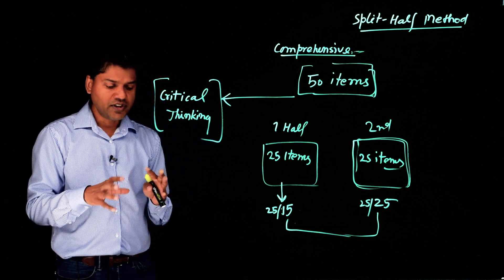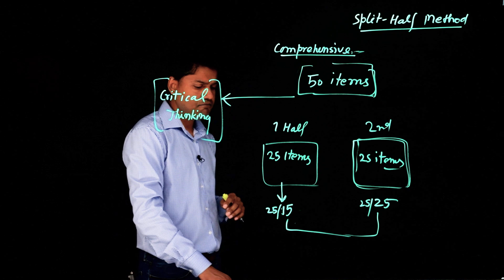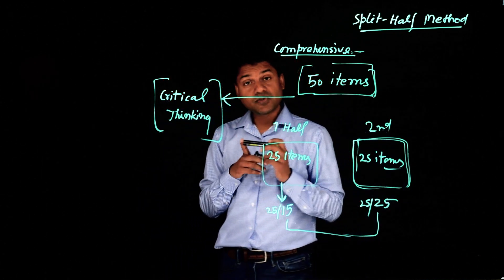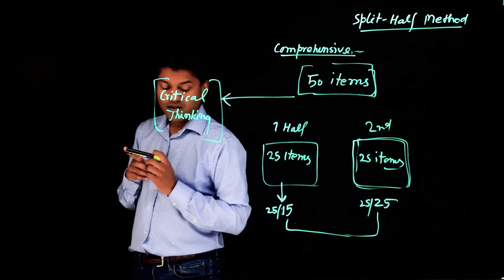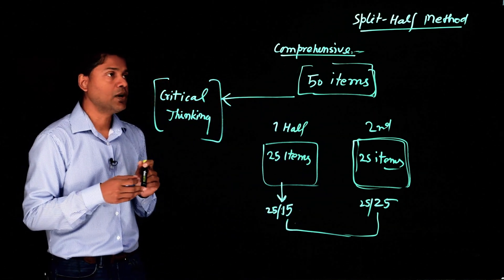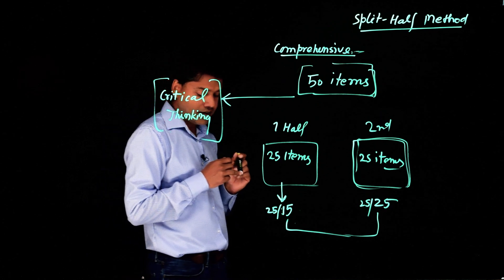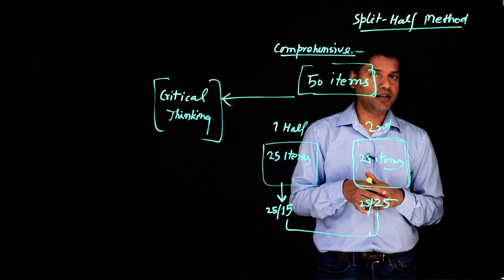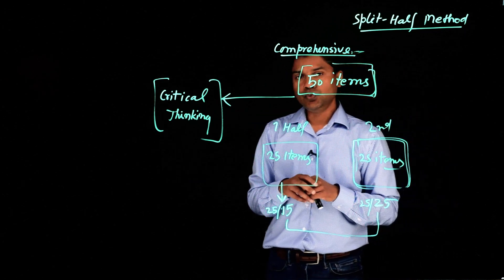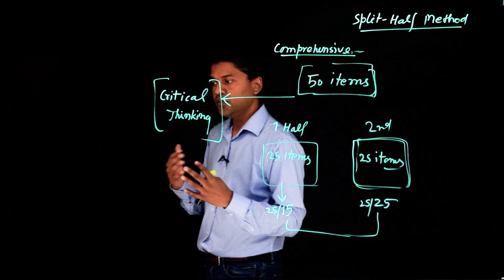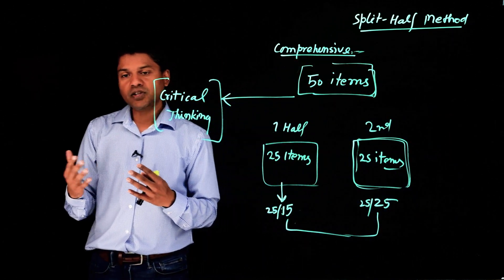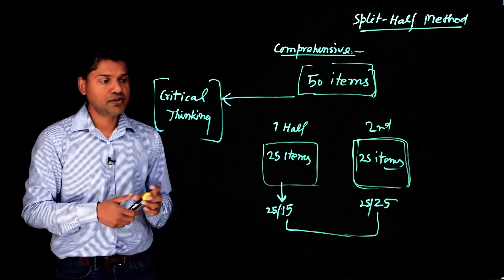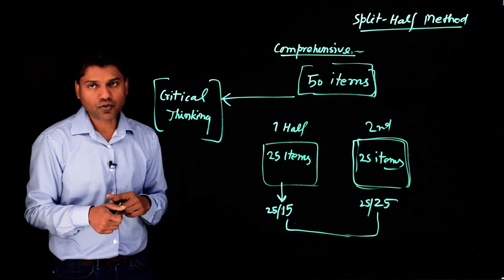So in the previous videos, we covered many methods of measuring reliability. We talked about test-retest reliability, we talked about inter-rater reliability, we talked about parallel forms reliability. And in this video, we are talking about split-half reliability. These four methods are used depending on what really fits in a research context, and you can use either of these methods to measure the reliability of your measurement tool.